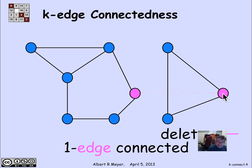In particular, if I delete that edge, then there no longer is a path between the two magenta vertices.